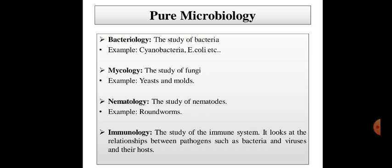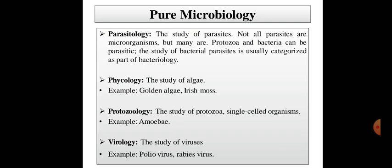The next branch is immunology — the study of the immune system. It looks at the relationship between pathogens such as bacteria and viruses, and their hosts. Next is parasitology — the study of parasites. Not all parasites are microorganisms, but many are. Protozoa and bacteria can be parasitic, and the study of bacterial parasites is usually categorized as part of bacteriology.